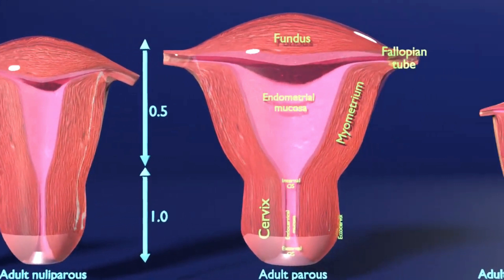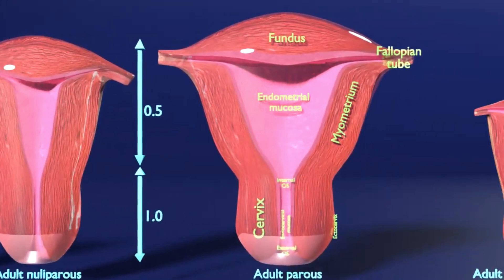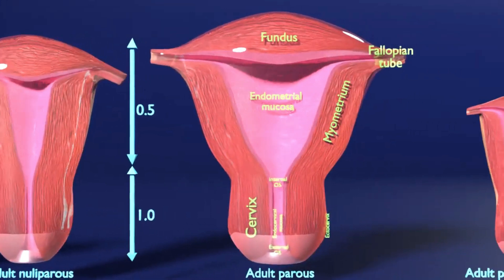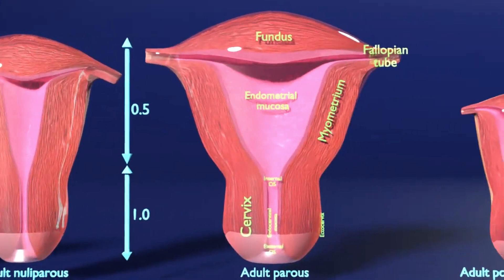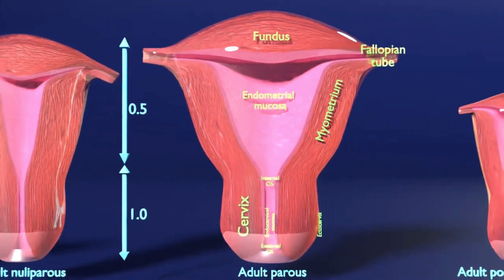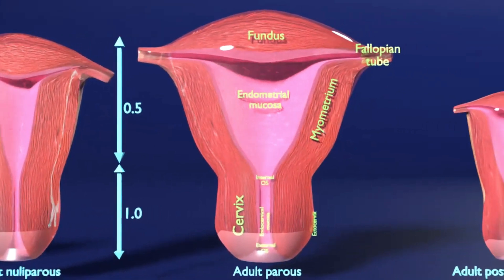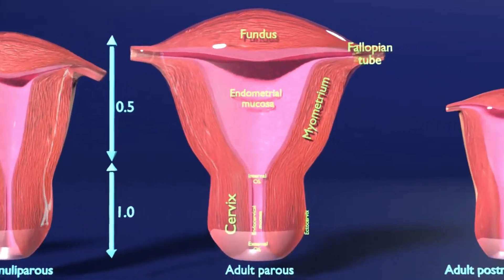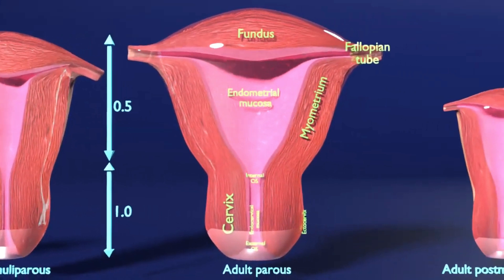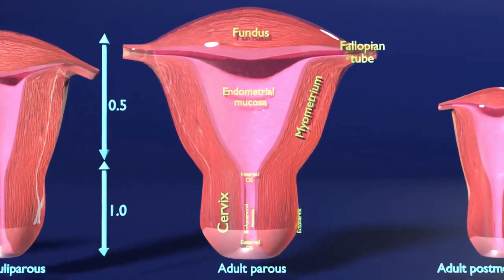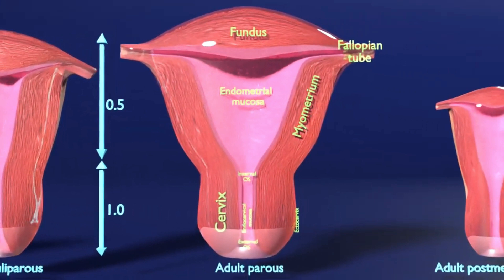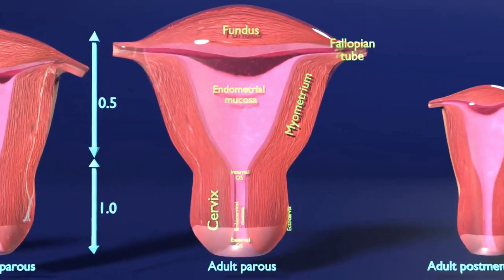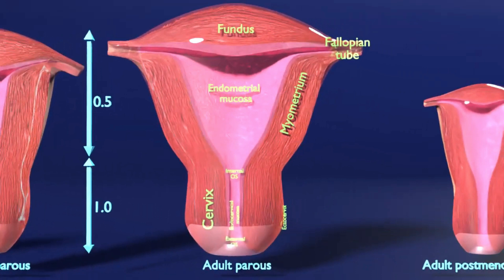The uterus is a dynamic female reproductive organ responsible for several reproductive functions including menses, implantation, gestation, labor, and delivery. It is responsive to hormonal changes within the body, which allows adaptation to different stages of a woman's reproductive life. The uterus adjusts to reflect changes in ovarian steroid production during the menstrual cycle and displays rapid growth and specialized contractile activity during pregnancy and childbirth. It can also remain in a relatively quiescent state during the pre-pubertal and post-menopausal years.